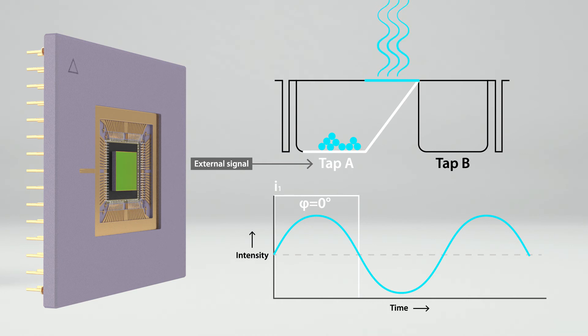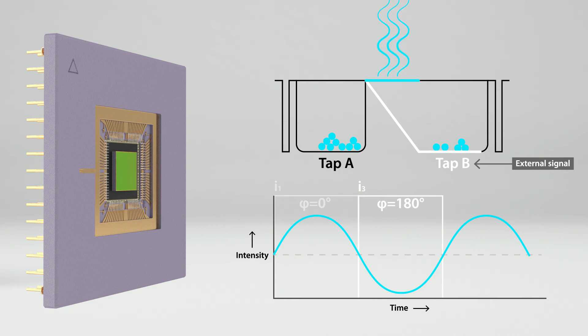At phase 180, tap B is active and all charge carriers go to charge bucket B, resulting in image I3. This kind of charge swing enables the simultaneous record of I1 and I3 in the same camera exposure, creating a double image.